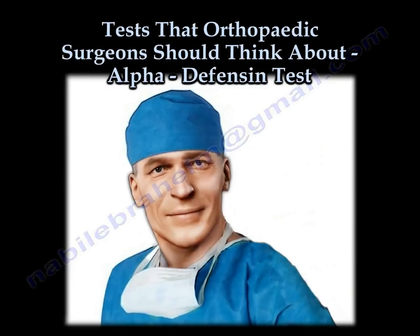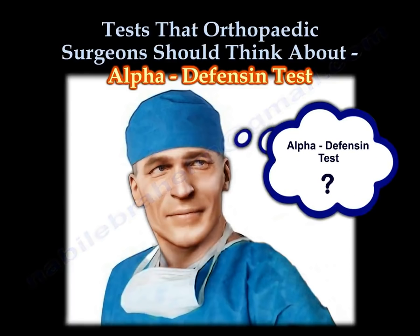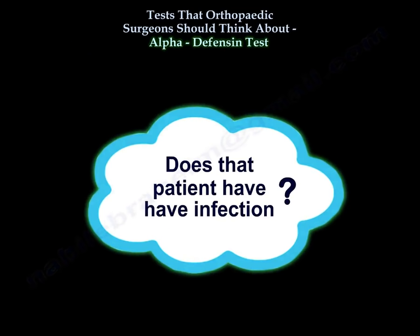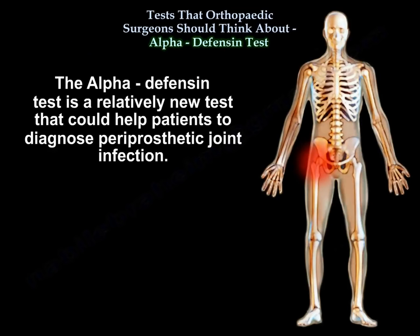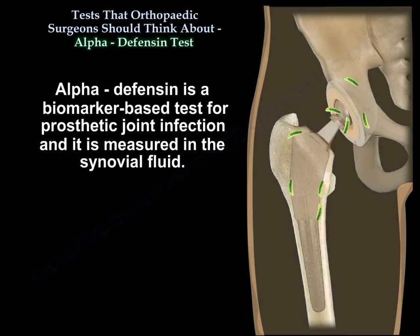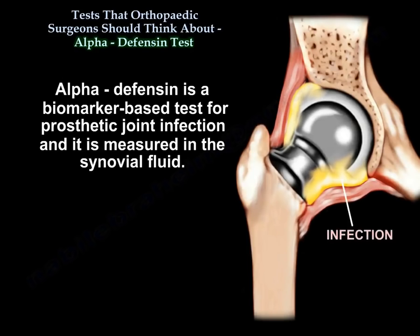Tests that orthopedic surgeons should think about: the Alpha-Defensin test. Does that patient have infection? The Alpha-Defensin test is a relatively new test that could help diagnose prosthetic joint infection. Alpha-Defensin is a biomarker-based test for prosthetic joint infection and it is measured in the synovial fluid.